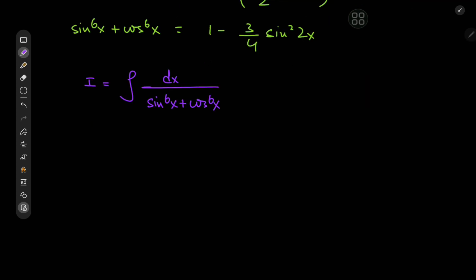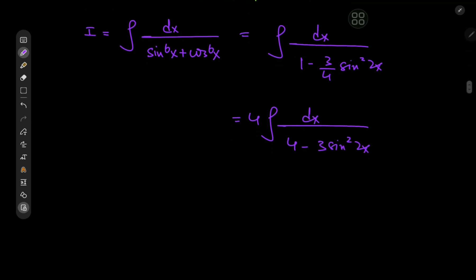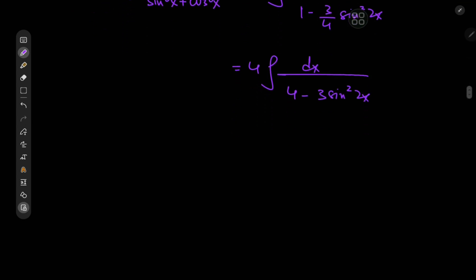Using this result, our integral becomes the integral of dx divided by 1 minus ¾·sin²(2x). We can expand by a factor of four, giving four times the integral of dx divided by 4 minus 3·sin²(2x).